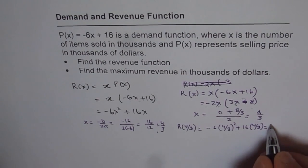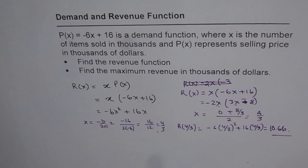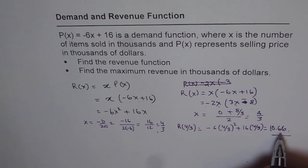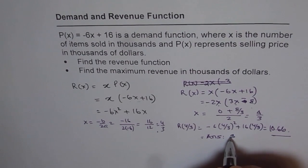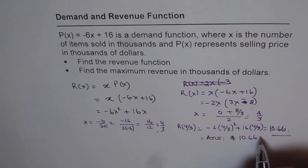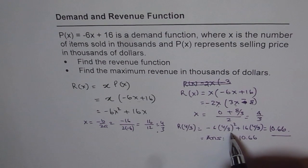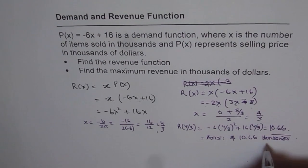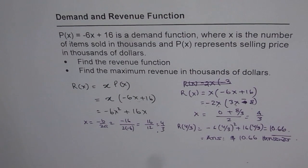That is approximately 10.66, or 10.666 thousands of dollars. That is the maximum revenue. The unit is thousands for both the revenue and x. So 10.666 is your revenue in this particular case. Thank you and all the best.